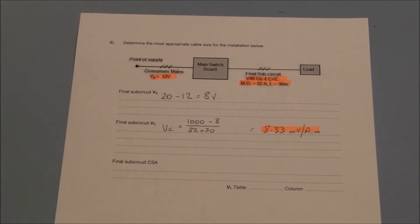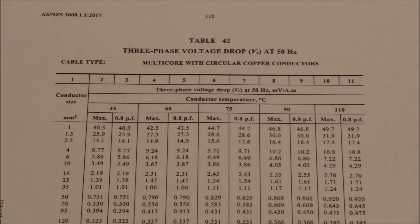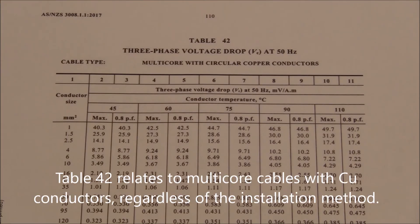This means that our selected cable can have a voltage drop of no more than 8.33 millivolts for every amp flowing through it for every metre of its length. Table 42 is the appropriate table for multi-core copper cables.